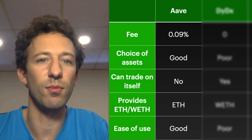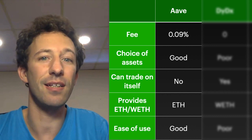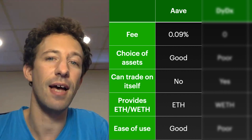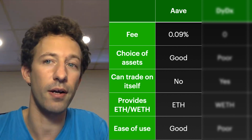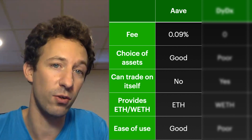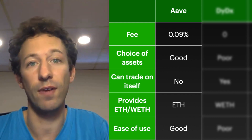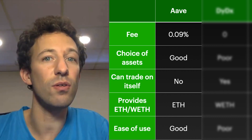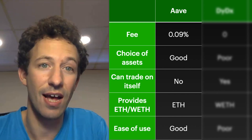On the pros side, they have a large choice of assets to borrow from. Ether is provided directly, and it's quite easy to integrate as they have good documentation and even a Truffle box, which is a template you can use to quickly create your own flash loan. On the cons side, they charge a 0.09% fee for each flash loan, and you cannot use an Aave flash loan to do an arbitrage on Aave itself. We'll see later how these pros and cons compare to other providers.